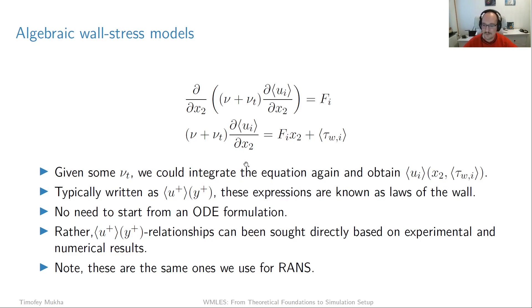But we don't need to actually do that in order to develop an algebraic wall model. Instead, I would say what was typically done, at least in the beginning, is that you look at this U plus versus Y plus profile from experimental or numerical results, for example, from DNS. And you try to seek some kind of relationship which approximates it well. One thing we want to note here is that these are the same things which are known as wall functions in RANS. So these will be familiar for most of you listening to this. So this is really nothing new. We use these type of relationships in RANS modeling as well.